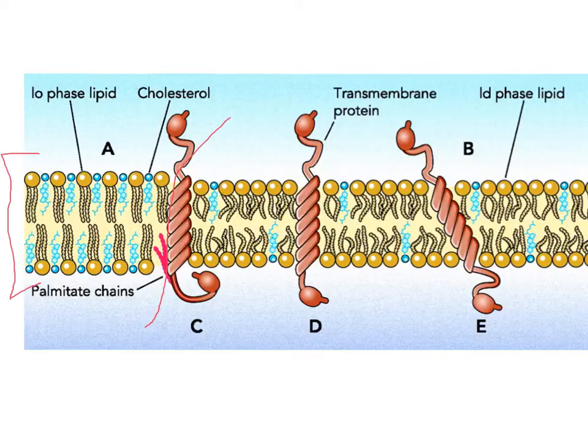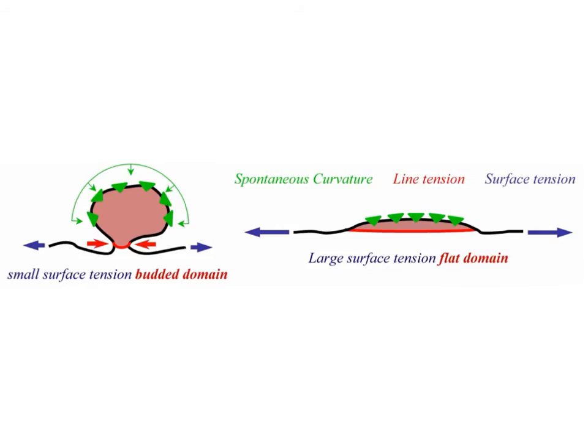The interfacial energy at the domain edge, also known as line tension, is a key parameter determining the distribution of domain sizes. If line tension is small, entropy is greater and the domains are small. If line tension is large, it favors fusion into larger domains, reducing the length of the raft boundary and thereby reducing the boundary's energy.